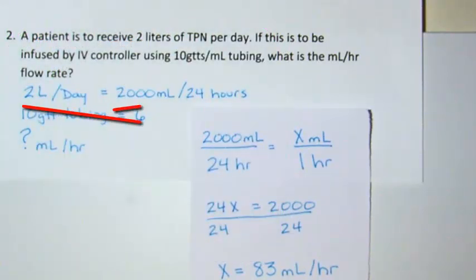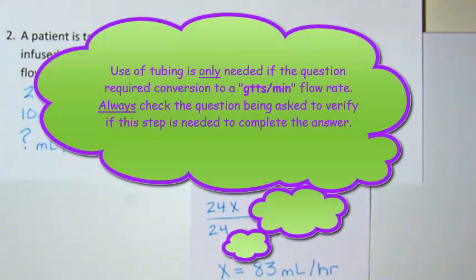Note the tubing was not used. Be cautious with this because having the information there causes a lot of incorrect answers where students feel compelled to use information that is provided in a question. Simply having the tubing does not mean that it is used.